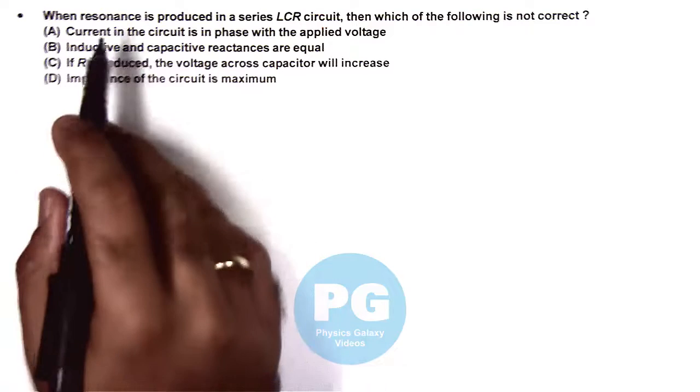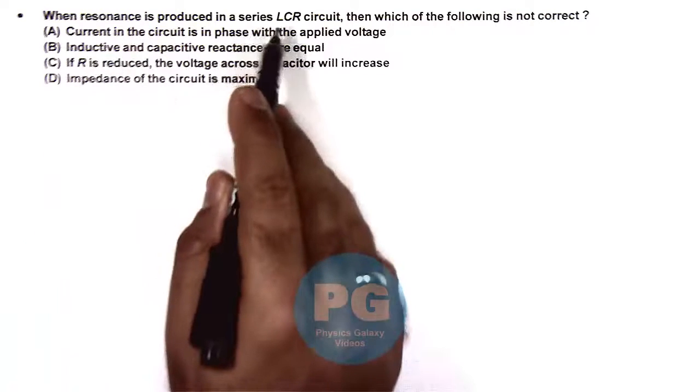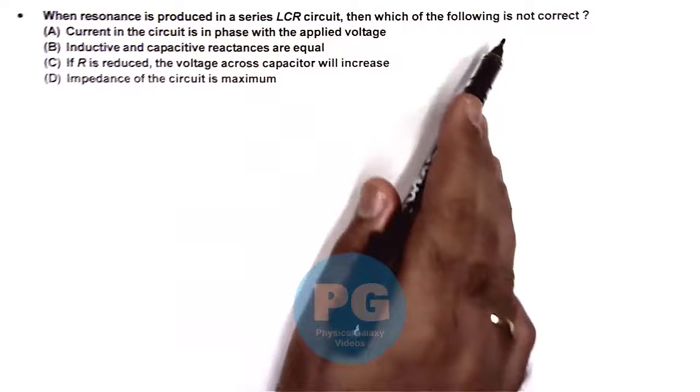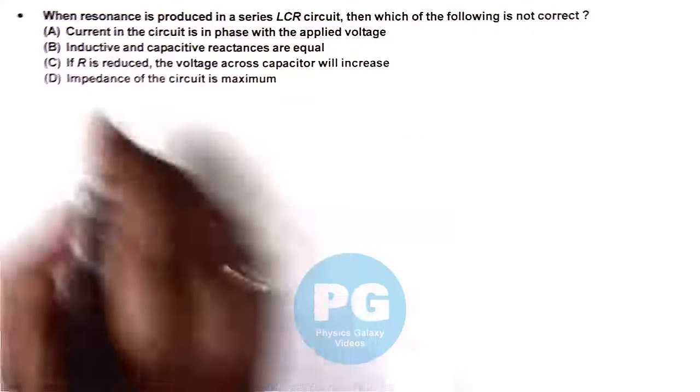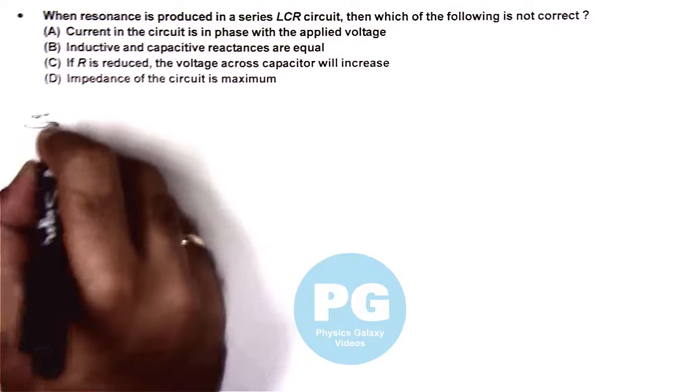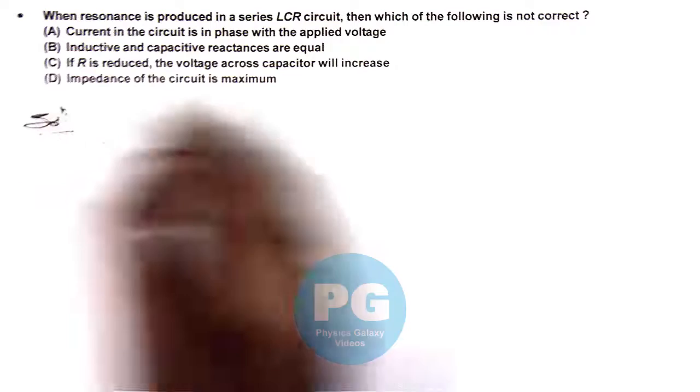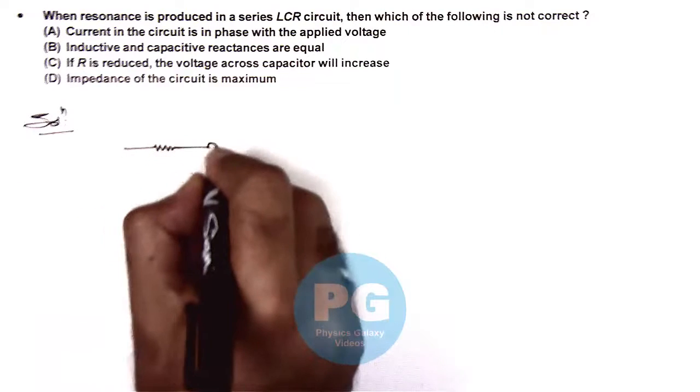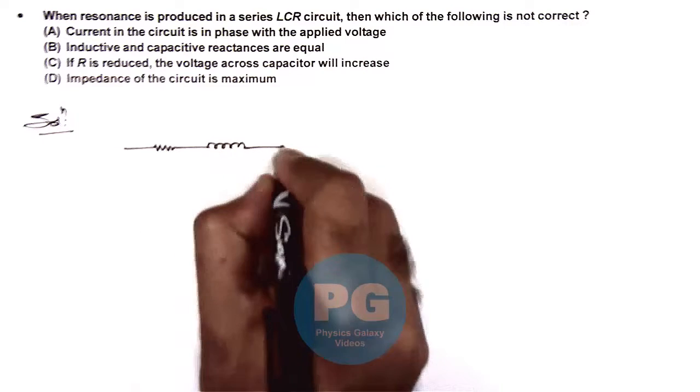This question says when resonance is produced in a series LCR circuit, then which of the following is not correct? So we can check all these one by one and about resonating condition in a series RLC we are already aware of.